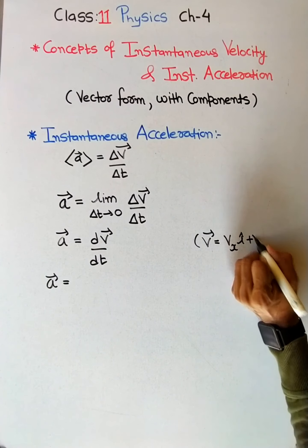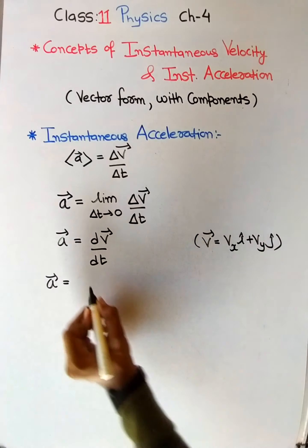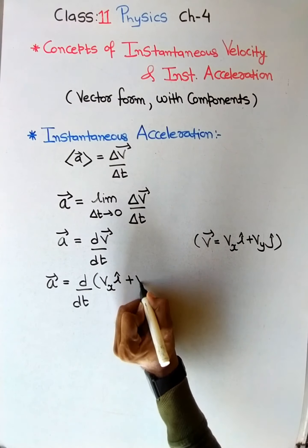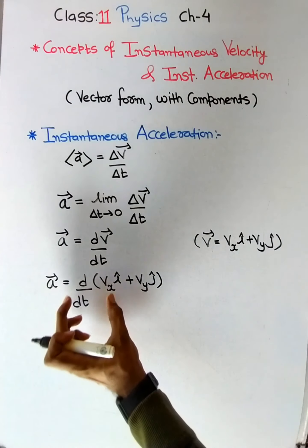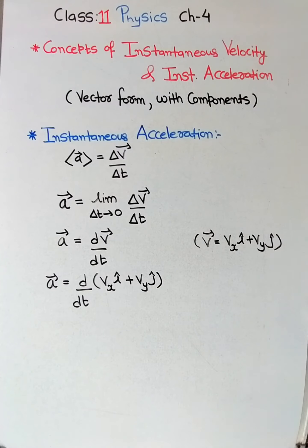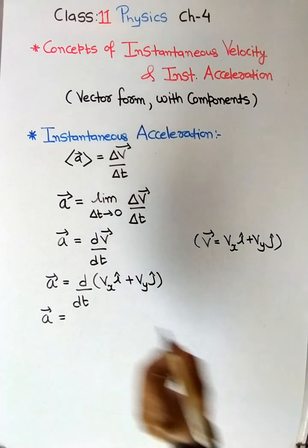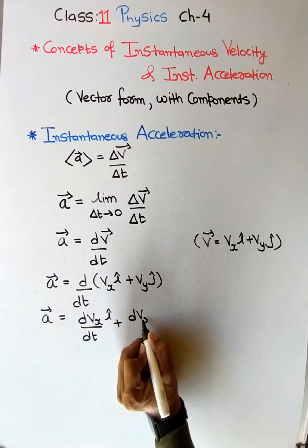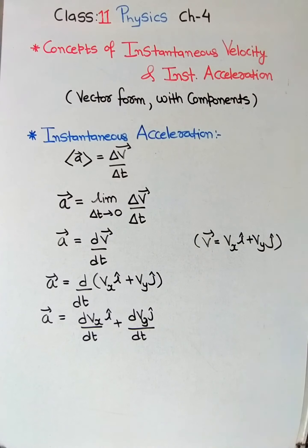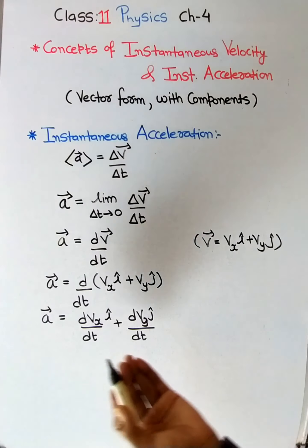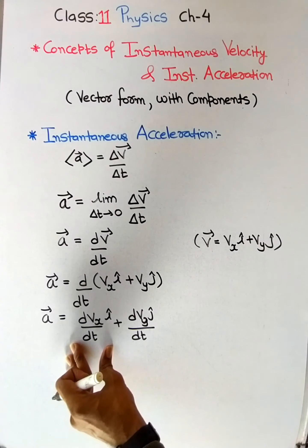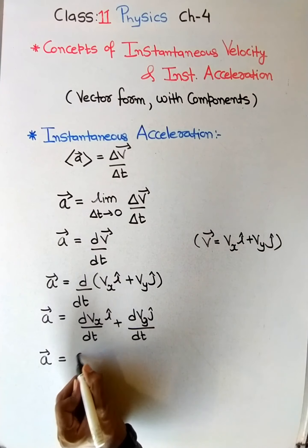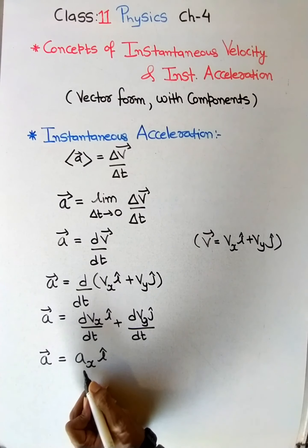Next, we replace v in terms of its components: v = vx·i + vy·j. Substituting into a = dv/dt, we get d(vx·i + vy·j)/dt. Distributing dt to both terms gives dvx·i/dt + dvy·j/dt. This is the instantaneous acceleration in terms of velocity components. We can replace dvx/dt as ax, the acceleration in the x-direction.